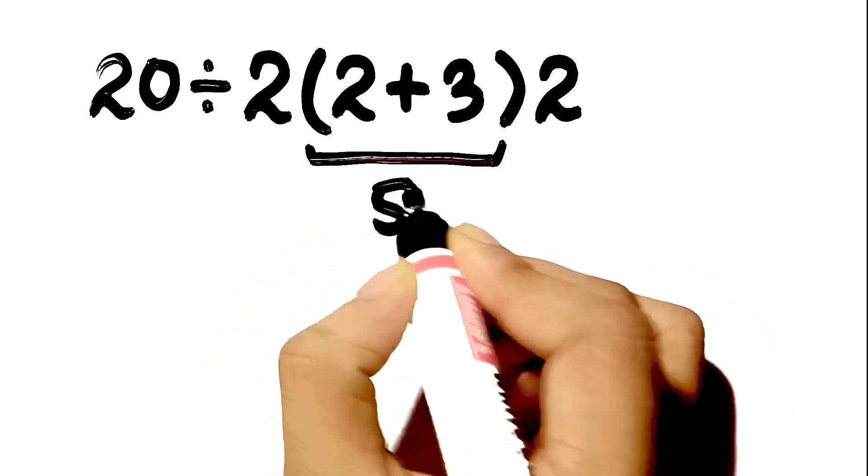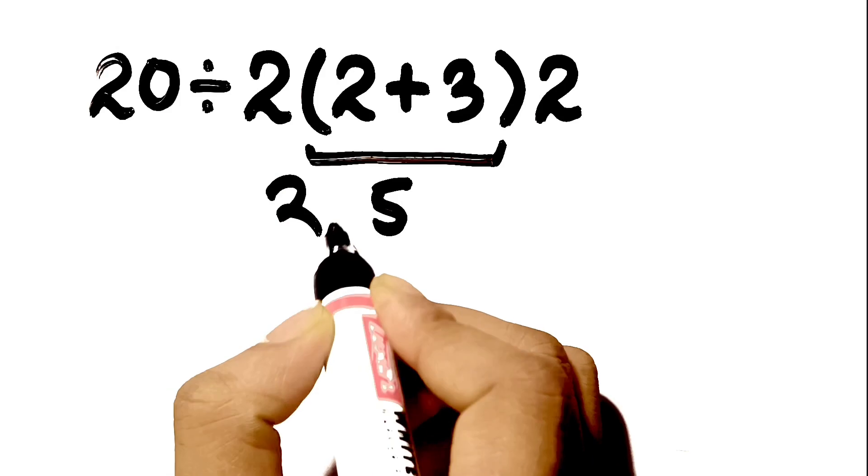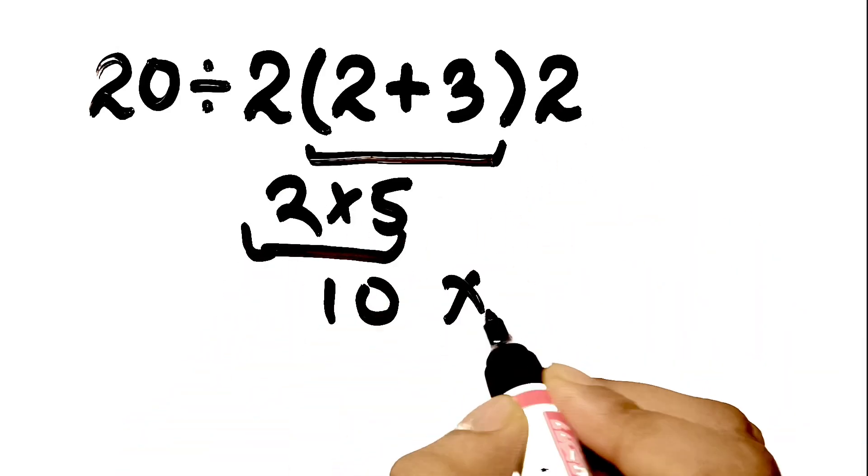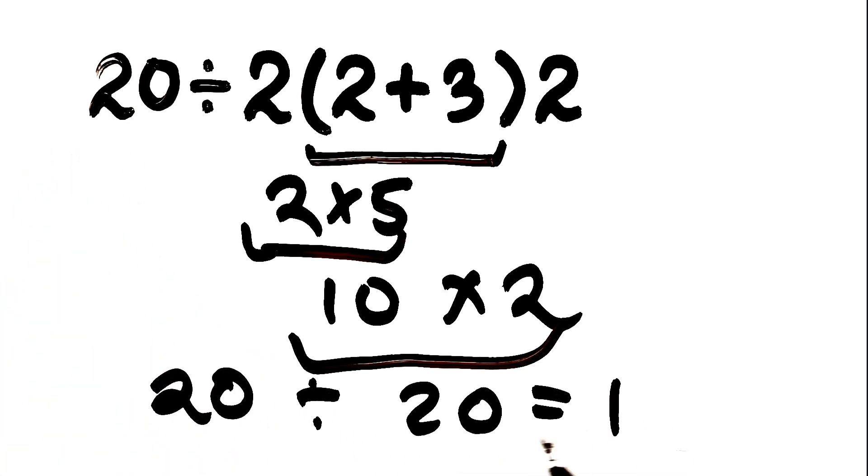2 plus 3 gives us 5 inside the parenthesis. Then 2 times 5 gives us 10. And again here we have 10 times 2 on the right, which gives us 20. And finally, 20 divided by 20 gives us 1.